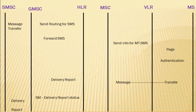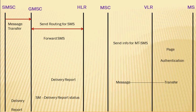Suppose there is an SMS at the SMSC end destined towards the mobile station. The SMSC will send the message transfer to the GMSC. Upon receiving the message transfer, the GMSC queries the HLR for the routing information of the destination mobile station. The HLR will provide the same to the GMSC.